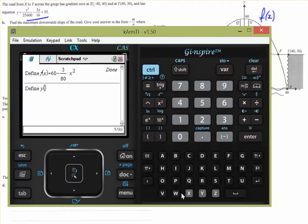So menu 1, 1, y of x equals x cubed divided by 25,600, minus 3 times x divided by 16, plus 35. And let's make sure that's come out right. Yep, those two match.